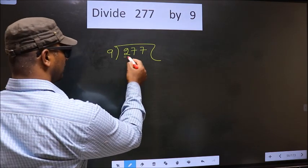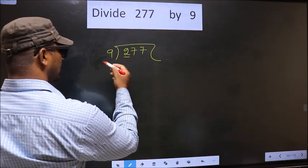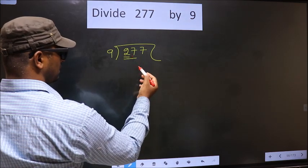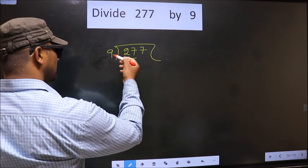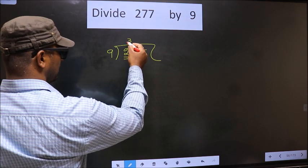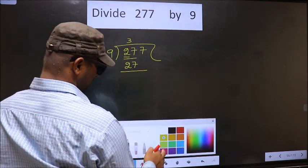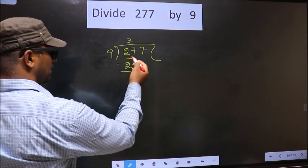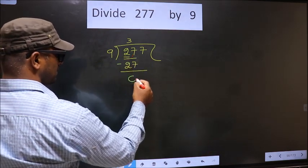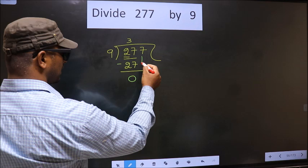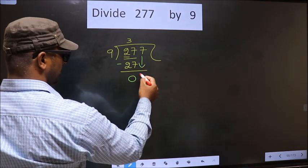Now, here we have 2. 2 is smaller than 9, so we take 2 numbers. That is 27. When do we get 27 in 9 table? 9, 3 is 27. Now, you subtract. 27 minus 27 is 0. Now, you bring down the beside number. That is 7 down.